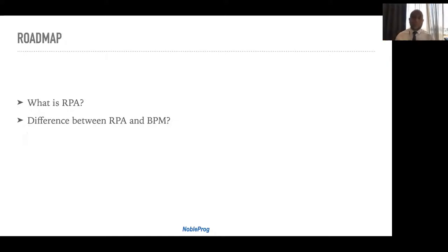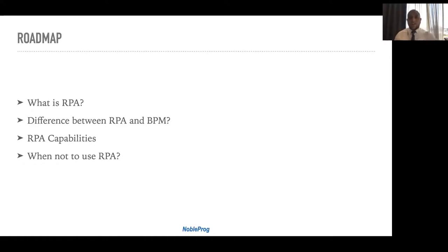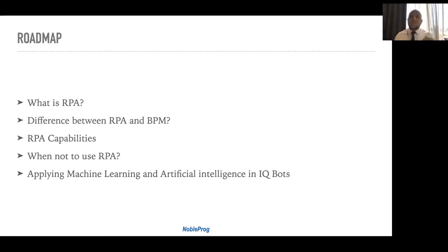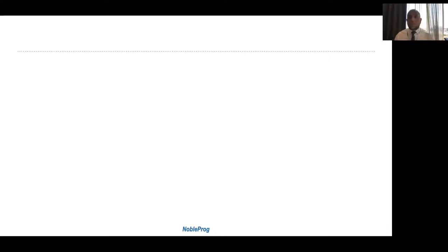We'll do a deep dive into RPA capabilities, then discuss an important aspect — when we shouldn't use RPA, and what checklist we need before implementing RPA projects. Finally, we'll cover a newer, advanced topic: applying machine learning and artificial intelligence to RPA, which we call IQ bots, and see how this concept is transforming the way RPA works today.